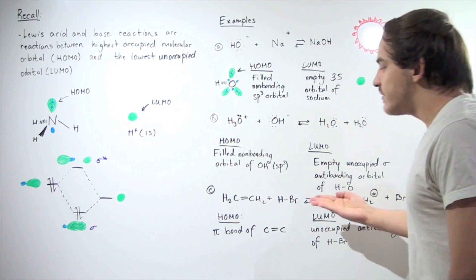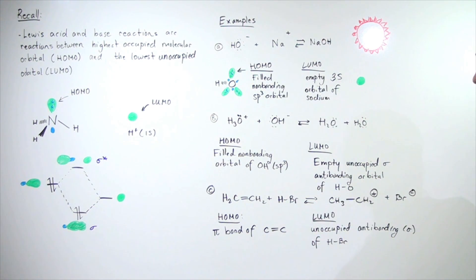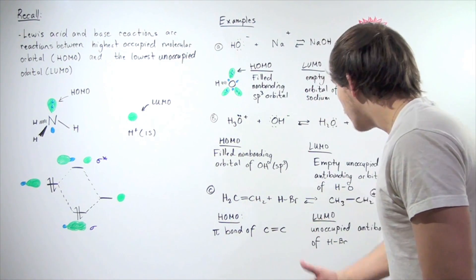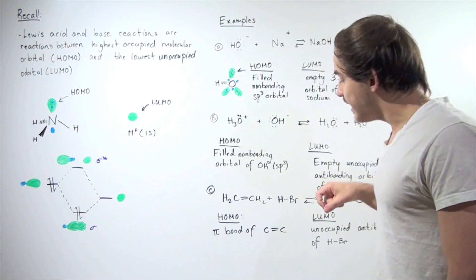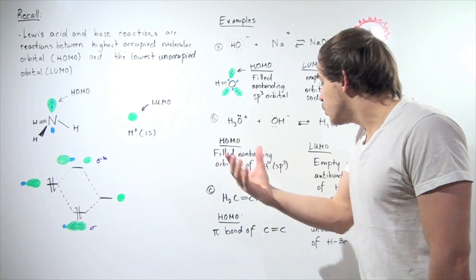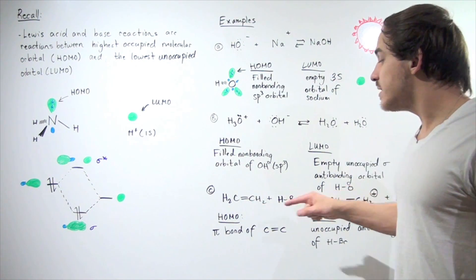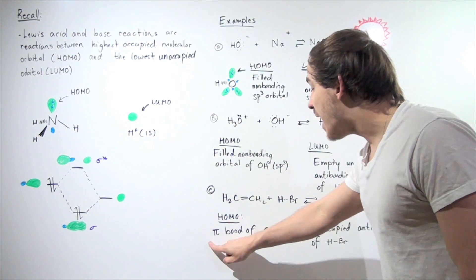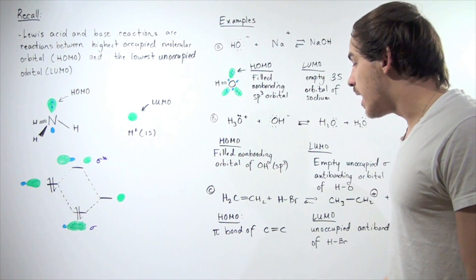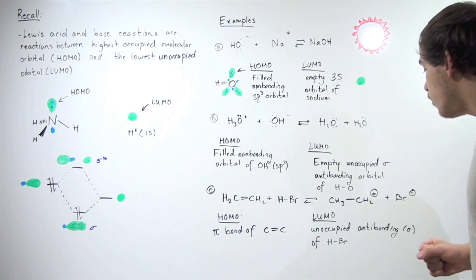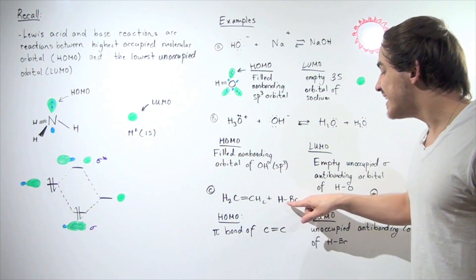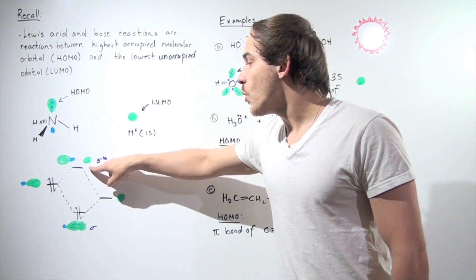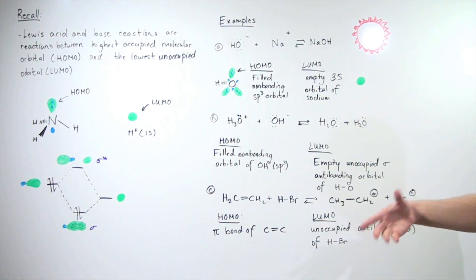In example C, we have an alkene reacting with hydrobromic acid to form a carbocation with a positive charge and a bromine anion. Which one is the HOMO and which one is the LUMO? Clearly it's the alkene — the pair of electrons in the pi bond is used to attract and take the H atom from bromine. So the highest occupied molecular orbital is the pi bonding orbital of the carbon-carbon double bond. For the LUMO, the sigma bonding orbital of HBr is taken, so we move to the next unoccupied orbital — the anti-bonding sigma molecular orbital of HBr is our LUMO.